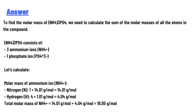To find the molar mass of (NH₄)₃PO₄, we need to calculate the sum of the molar masses of all atoms in the compound. (NH₄)₃PO₄ consists of 3 ammonium ions (NH₄⁺) and 1 phosphate ion (PO₄³⁻).